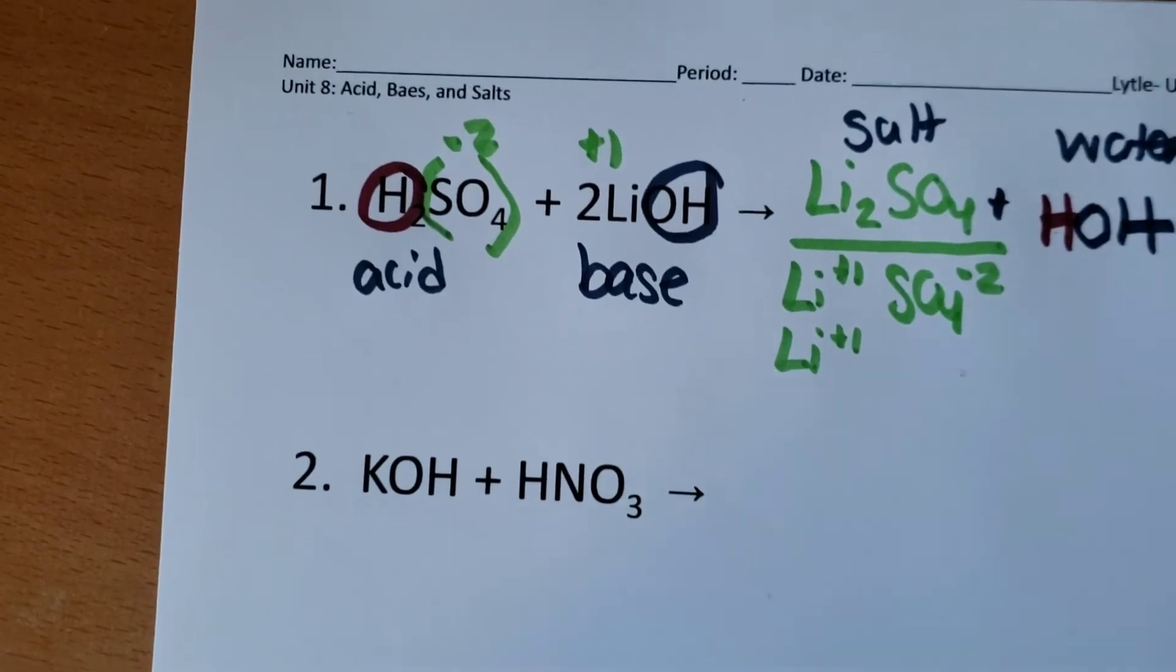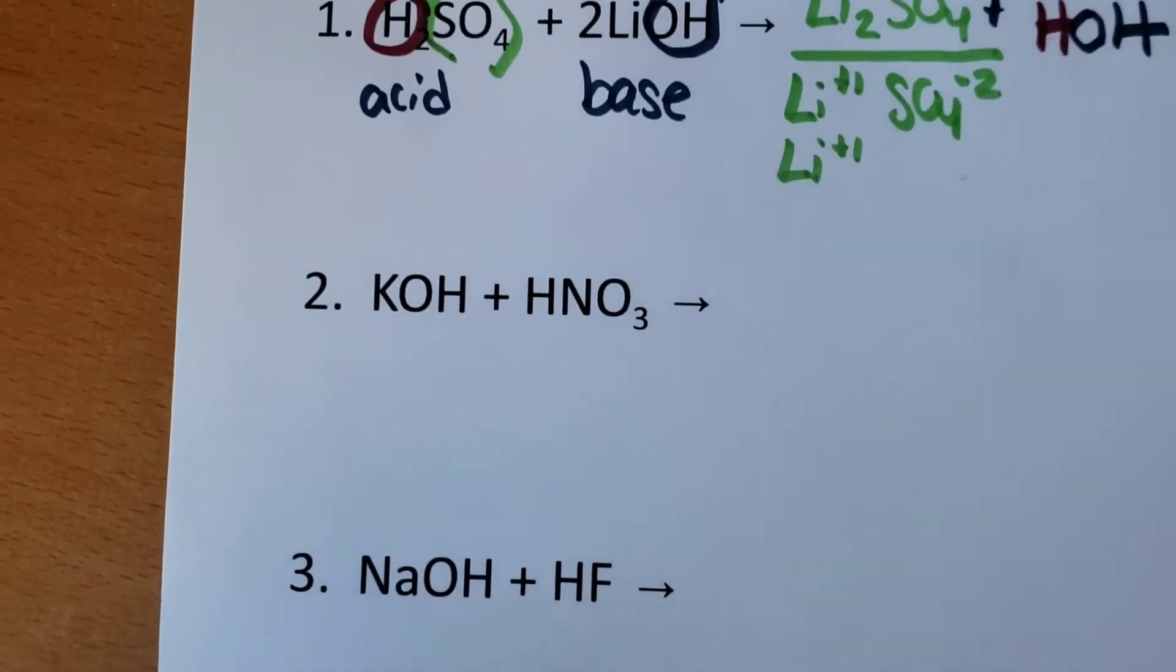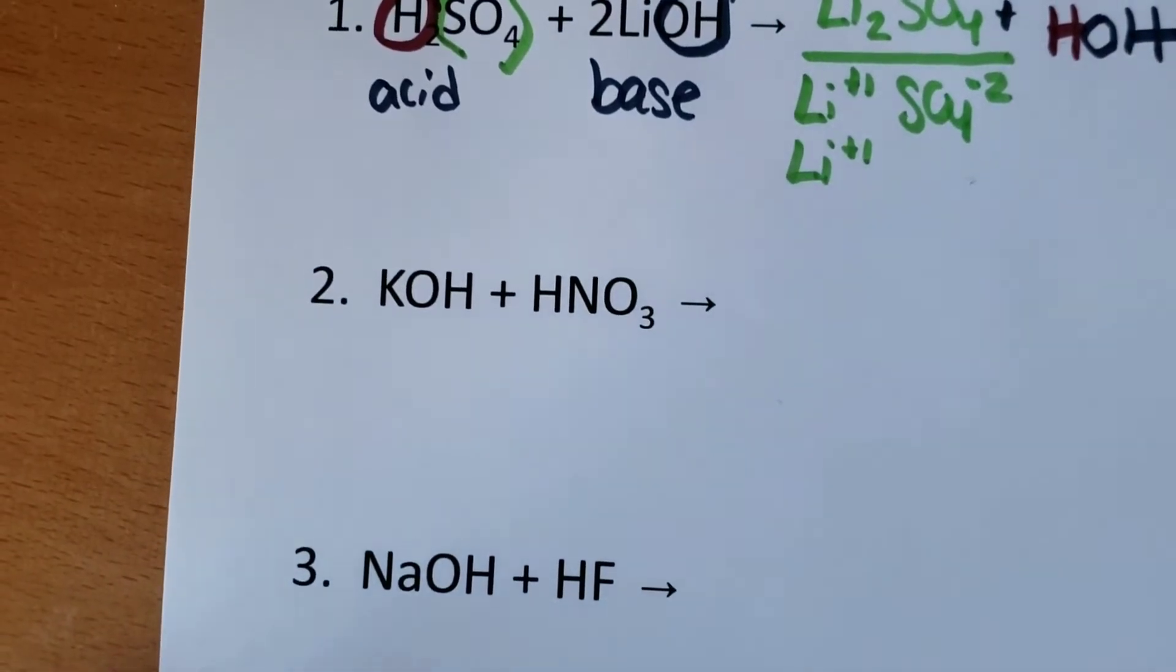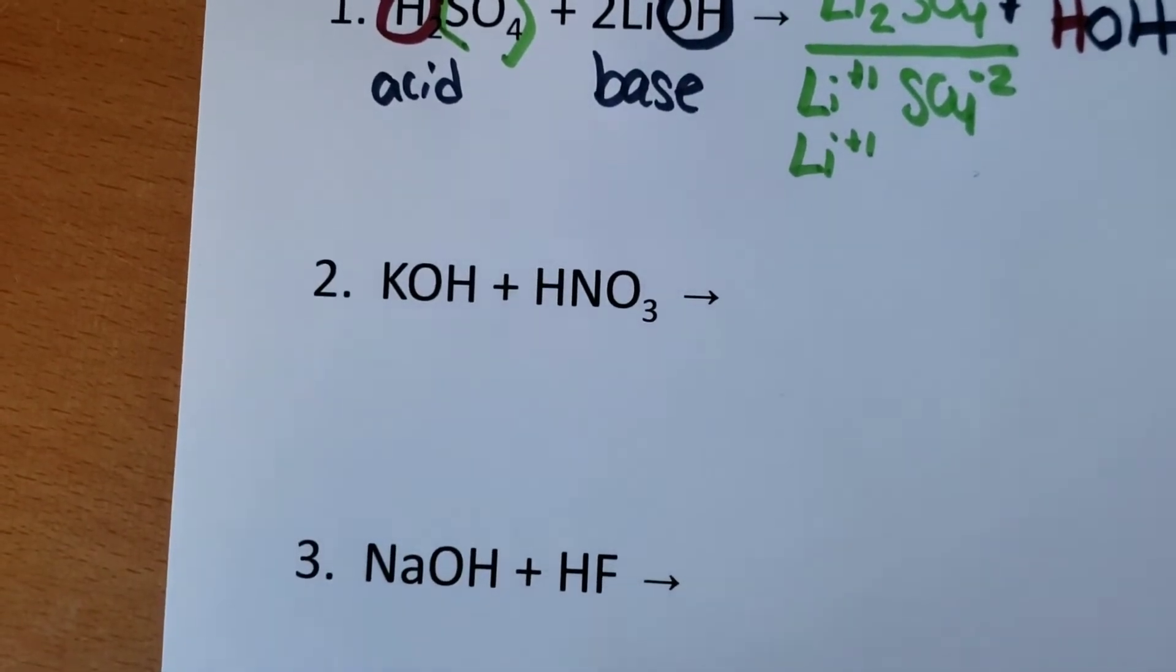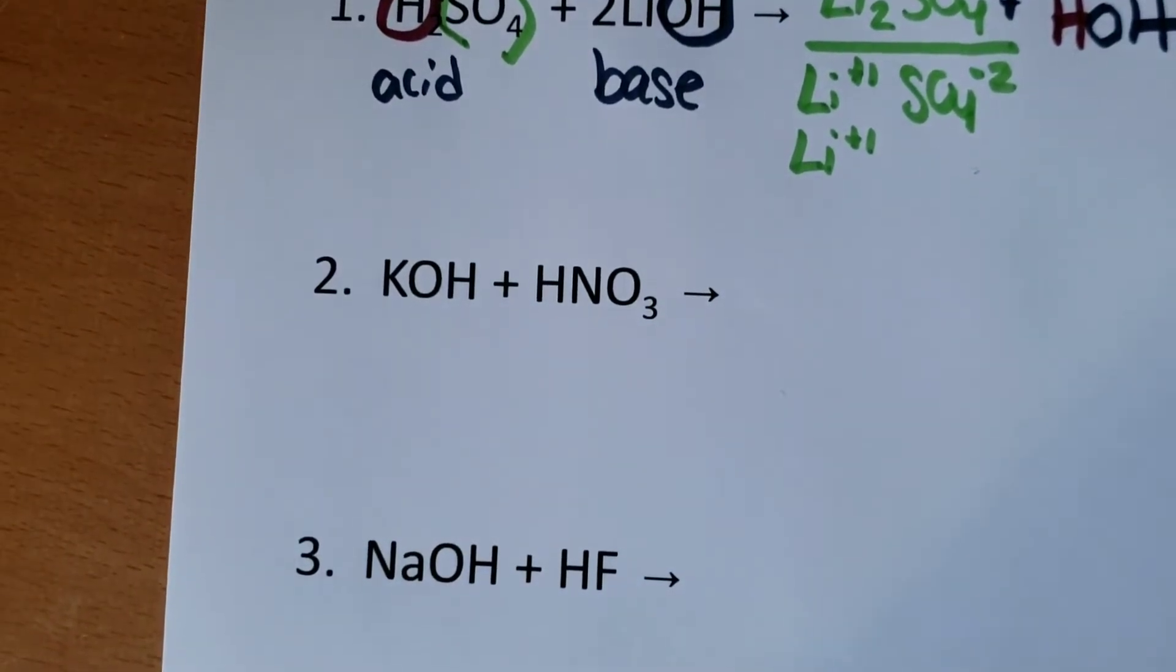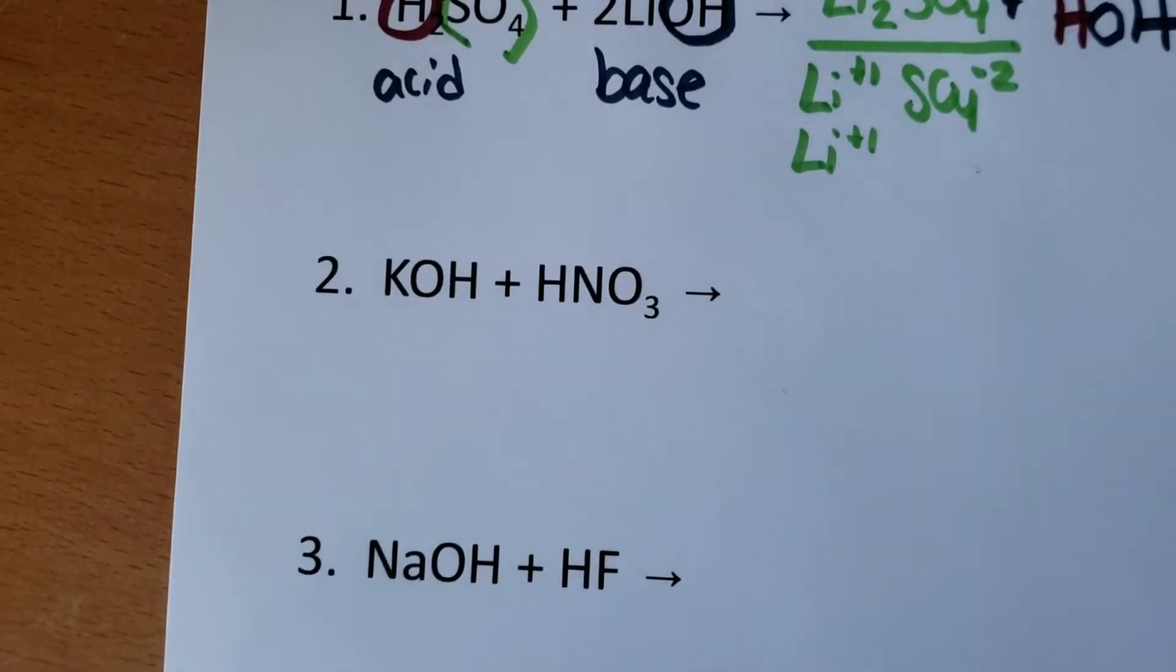So in this next example, the first thing we're going to do is we're going to find out which is an acid and which is a base. Again, to find that out, we can use a reference table.